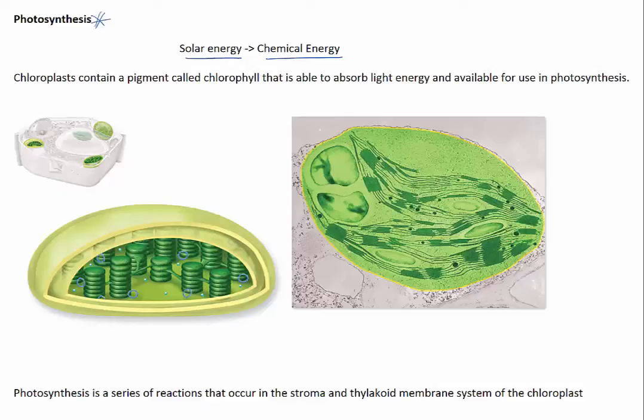These organisms have cells that contain a specialized oval shaped organelle called chloroplasts. Chloroplasts contain a pigment called chlorophyll that is able to absorb light energy and make it available for use in photosynthesis.